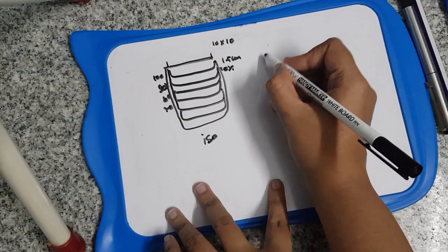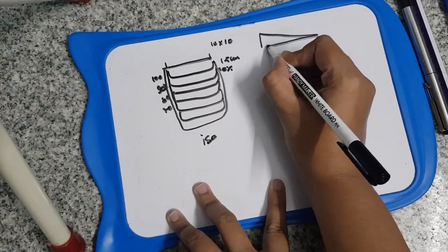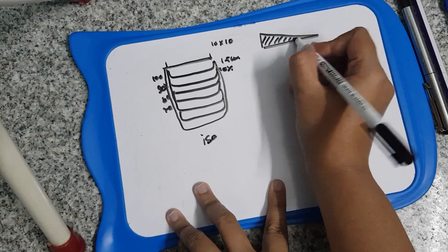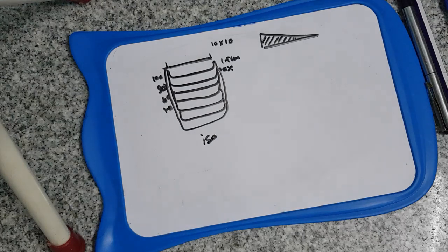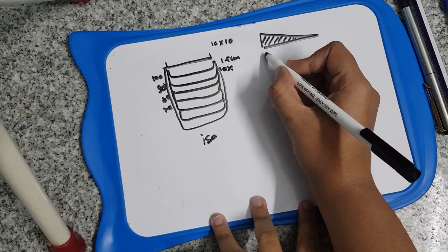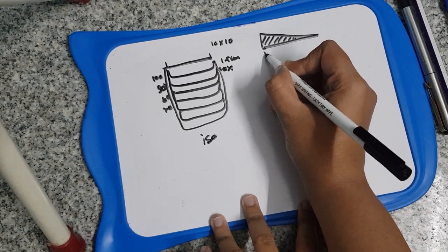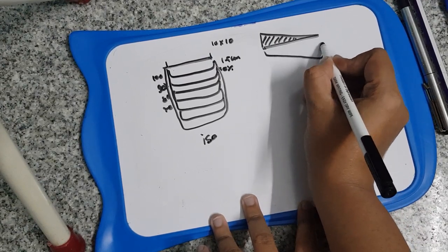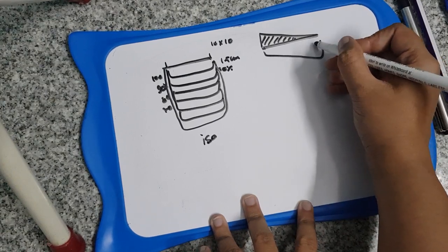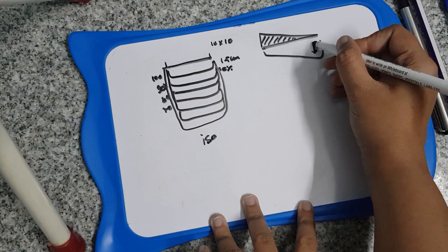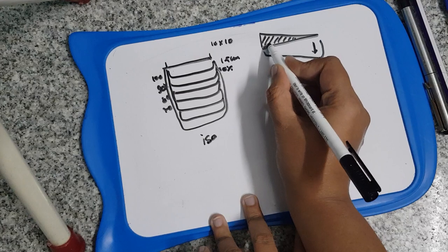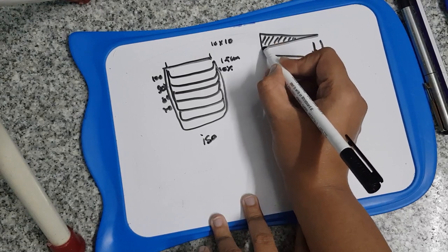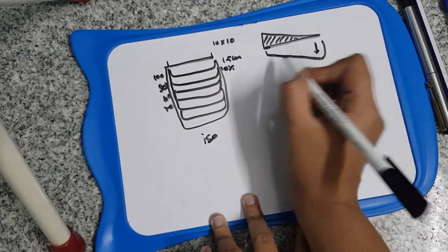Now if you use a wedge — wedges are used to correct inhomogeneity — the isodose curves will change. On the thinner side of the wedge there is less attenuation, so the dose is higher there, and on the thicker side there is more attenuation. Because of this, the isodose curves will bend.